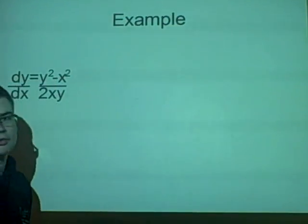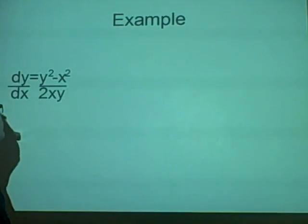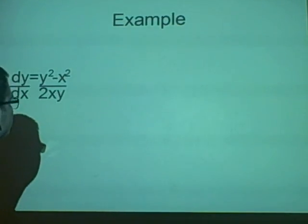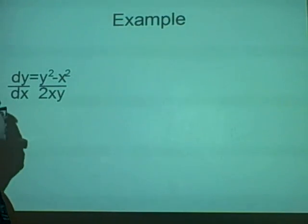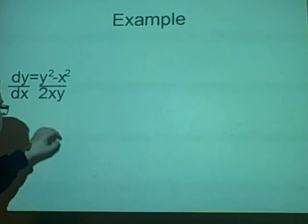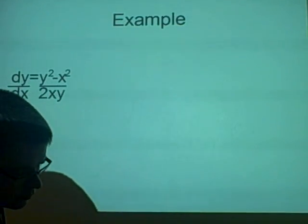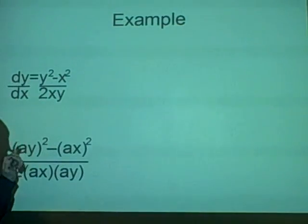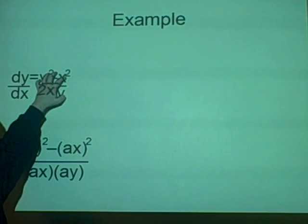Right, so we have an example where we have dy over dx equals y squared minus x squared over 2xy. Now what we want to do to prove this is homogeneous is to swap the y for ay and the x for ax. So we do that, and that gives us this equation. And what we want to do now is prove that this equals this.